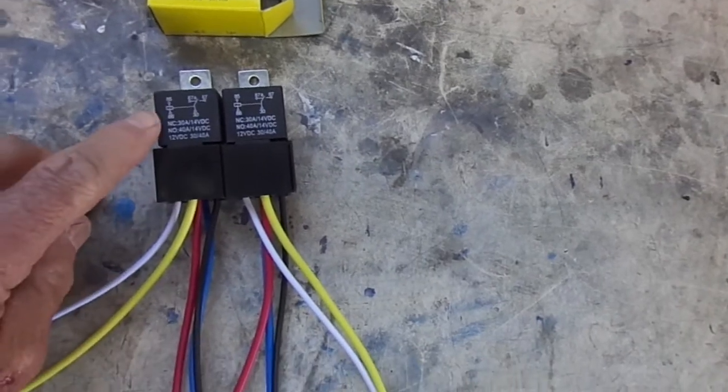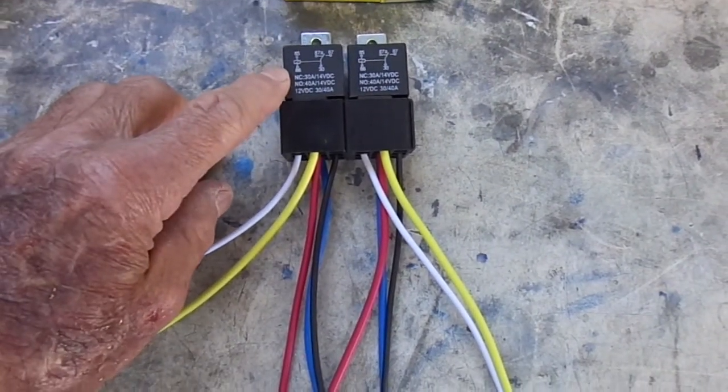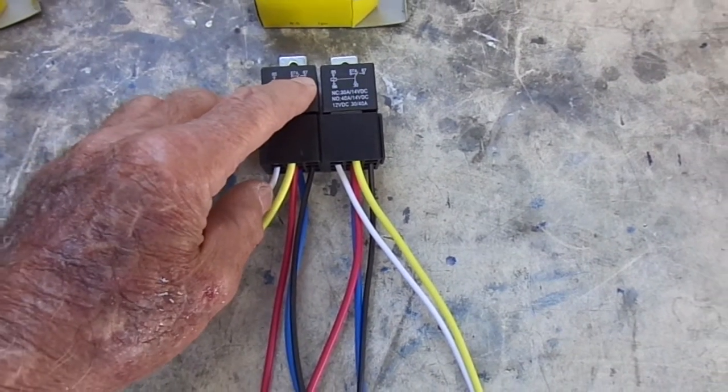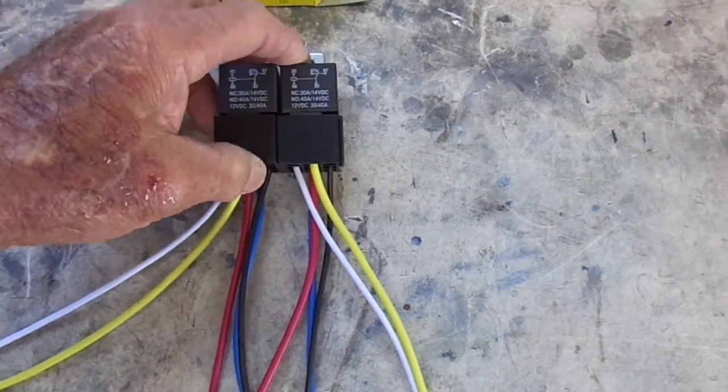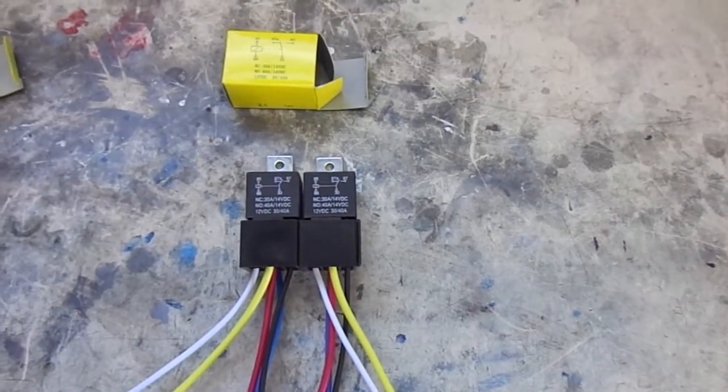Now when you look at this, you see the 85 and 86 is the power coil. 30 is power going in. 87 is the power going out that we want. Now these simple relays interlock. They slide together which makes it easy to fasten somewhere.